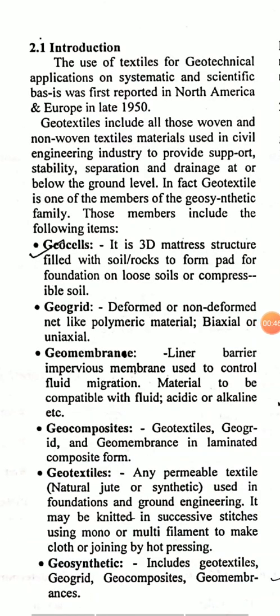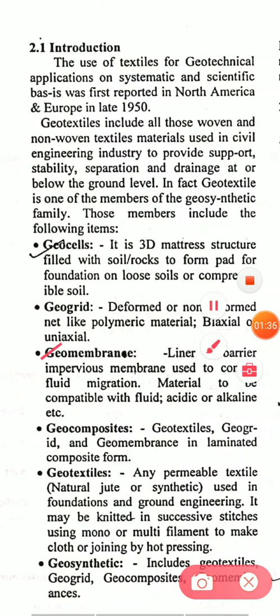Applications of geotextiles and references. First, an introduction: the use of textiles for geotechnical applications on a systematic and scientific basis was first reported in North America and Europe in the late 1950s. Geotextile includes all woven and non-woven textile materials used in the civil engineering industry to provide support, stability, separation, and drainage at or below ground level. Geotextile is one member of the geosynthetic family, which includes geocells, geogrids, geomembranes, and geocomposites.